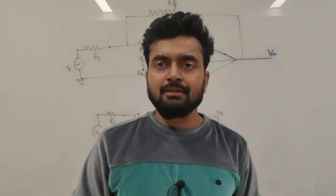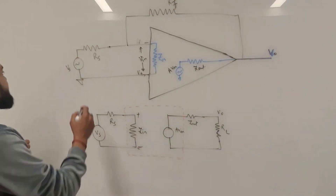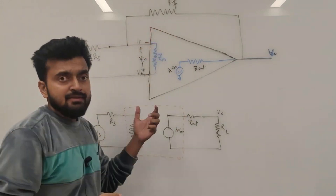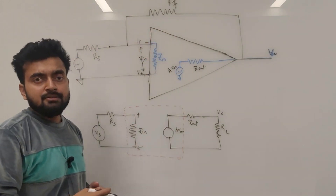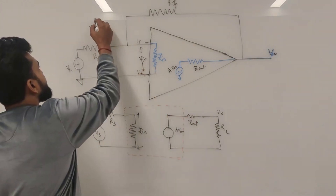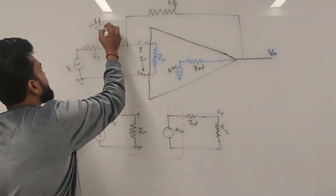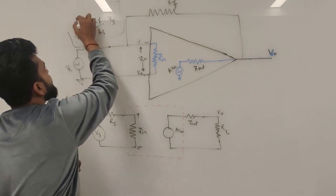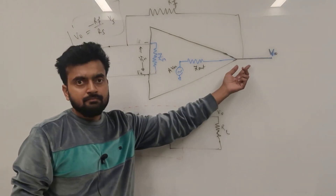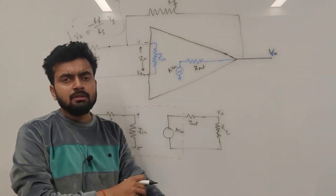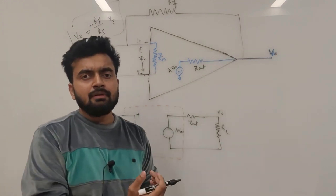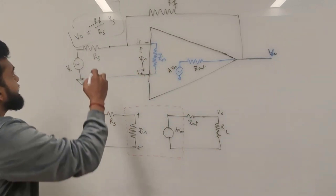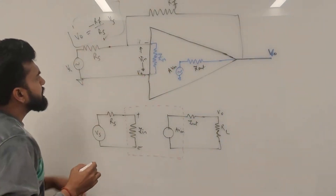The very essence of an op-amp is to amplify a weak signal. So let's say we want to amplify a signal Vs by a factor of 2. In the case of an inverting amplifier, the output equation is Rf/Rs times Vs equals the output.